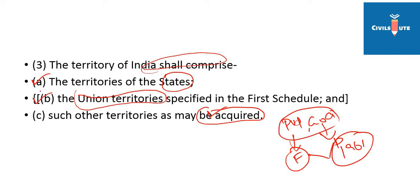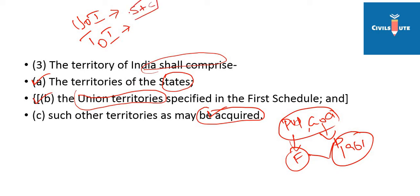In this article, we have two main terms and meanings. The first one is the Union of India, and the second is the Territory of India. The Union of India refers to the center and the states. The Territory of India includes Union of India plus acquired territories.